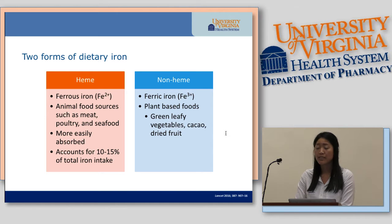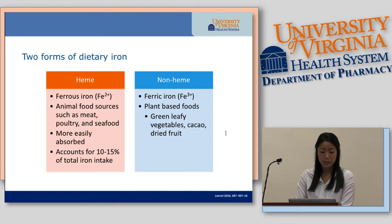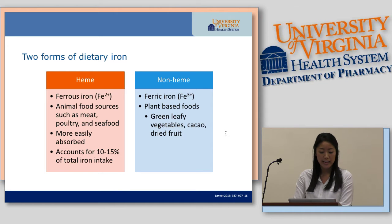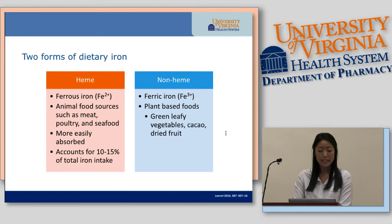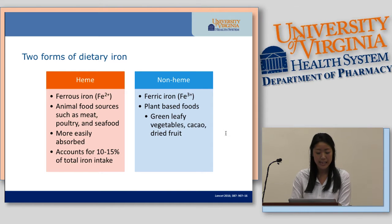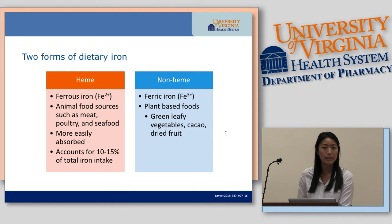The two forms of dietary iron are heme and non-heme. Heme iron is in the ferrous state and is the most easily absorbed form, coming from animal food sources such as meat, poultry, and seafood. Non-heme iron is ferric iron, found mainly in plant-based foods — green leafy vegetables, cacao, and dried fruit. Those who eat meat get iron from both sources, so those on vegetarian diets are more likely to develop iron deficiency anemia.